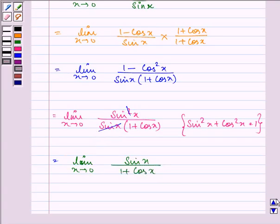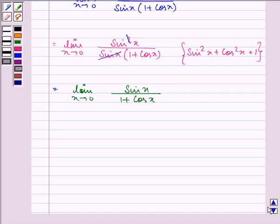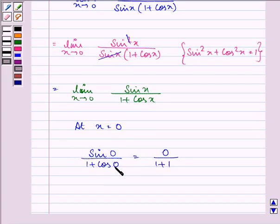Since we cannot use the trigonometric limits here, at x equals 0, we have the value of sin x over 1 plus cos x as sin 0 over 1 plus cos 0, that is further equal to 0 upon 1 plus 1 as the value of cos 0 is 1. So we have 0 over 2, that is further equal to 0.